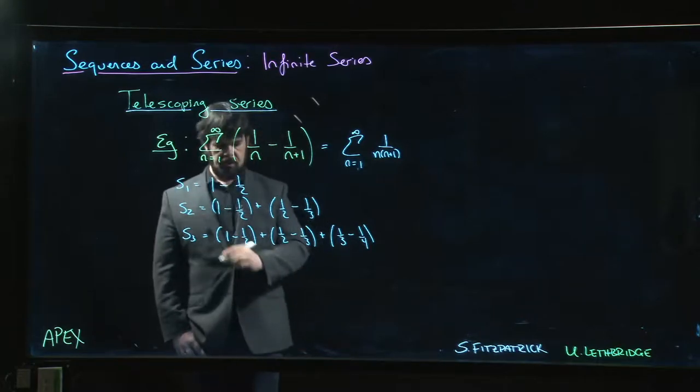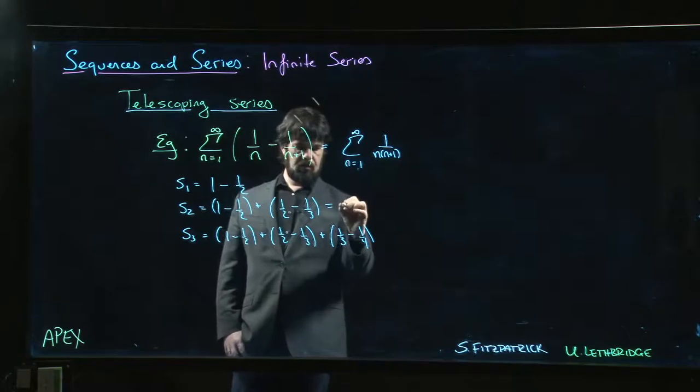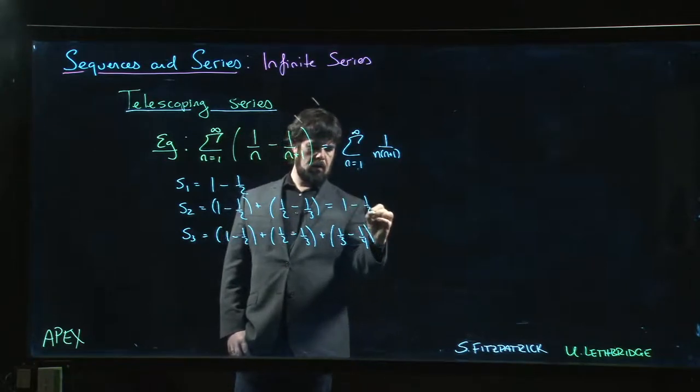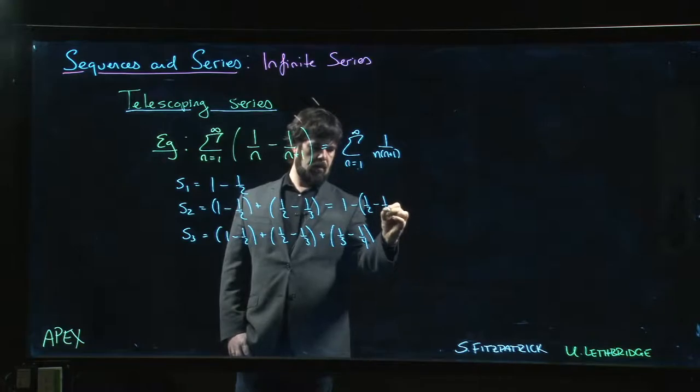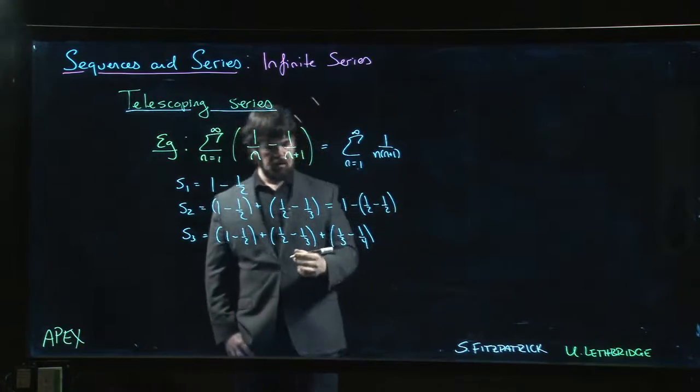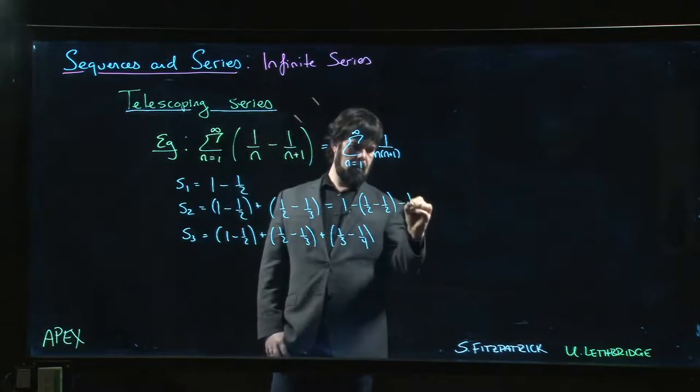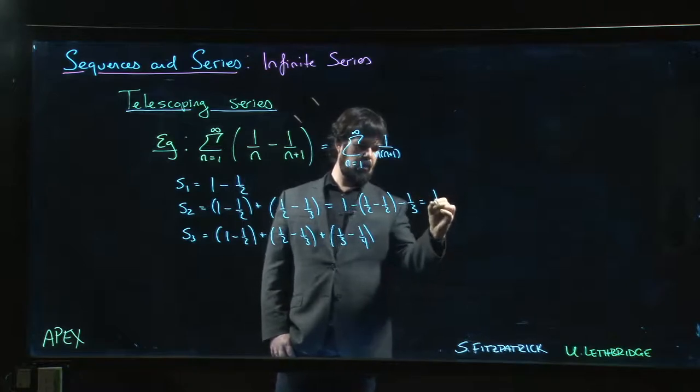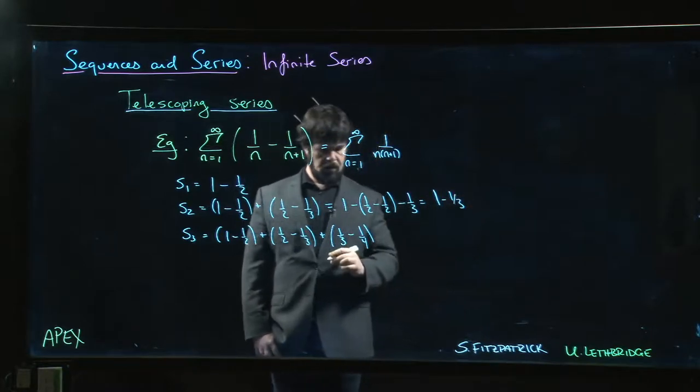We can regroup this as 1 minus 1 half plus 1 half, so half minus half in there, minus 1 third, so 1 minus 1 third.